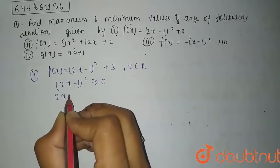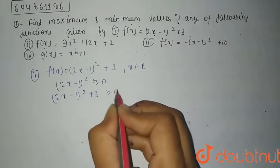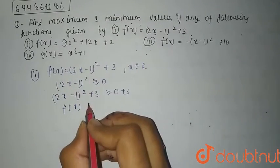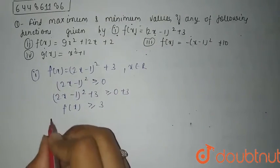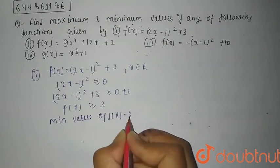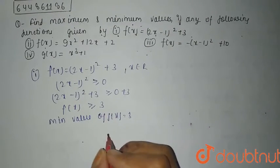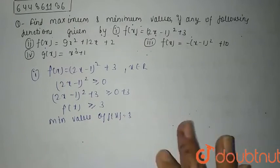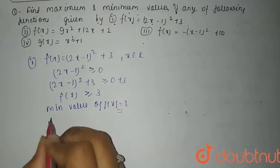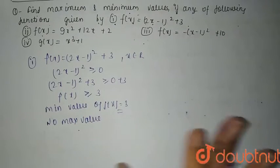Thus (2x - 1)² + 3, which is f(x), will always be greater than or equal to 0 + 3. Adding 3 to both sides, f(x) is always greater than or equal to 3. So the minimum value of f(x) is 3, because it is always going upward from 3. It will not go below 3. So minimum value is 3, and it has no maximum value because it goes to infinity.